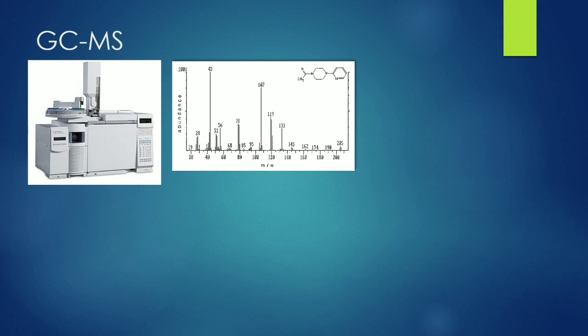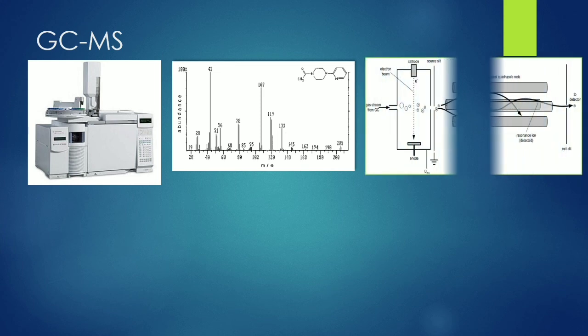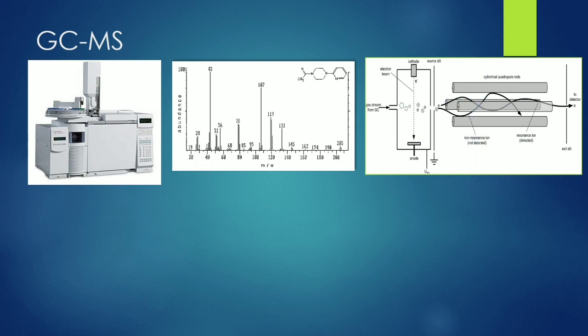What you are seeing is a typical GCMS spectrum — it is more or less like an Indian scoreboard where Sehwag was playing in the first 10 overs, making sixes and boundaries, and India was scoring at an average of more than six runs per over. Then suddenly when he got out, you can see the scoring rate came down. This is a typical GCMS spectrum.